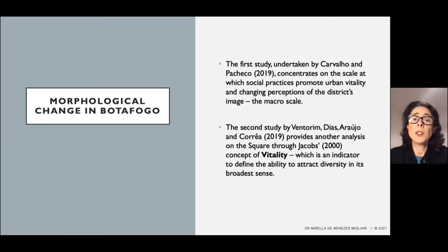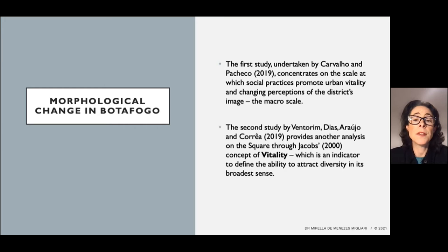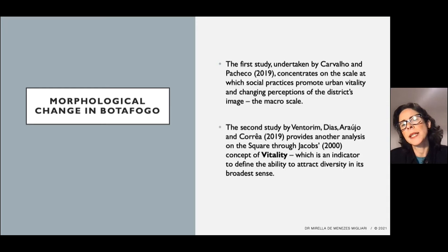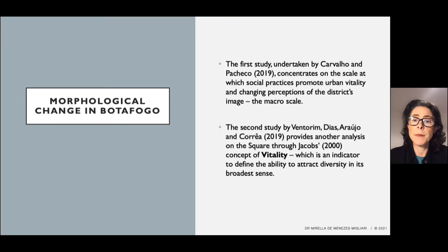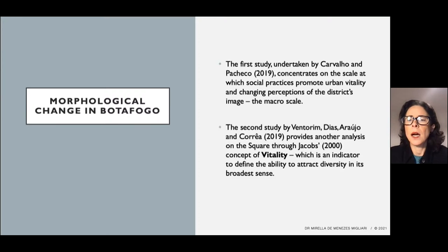For the morphological change in Botafogo, we have looked into two specific studies about the urban morphology of Botafogo conducted by urbanists from the Universidade Federal Fluminense, Rio de Janeiro, Brazil. The first study, undertaken by Carvalho and Pacheco 2019, concentrates on the scale at which social practices promote urban vitality and changing perceptions of the district's image at the macro scale. The second study, by Ventorin, Dias, Araujo and Correa 2019, provides another analysis of the square through Jacobs' concept of vitality, which is an indicator to define the ability to attract diversity in its broadest sense.